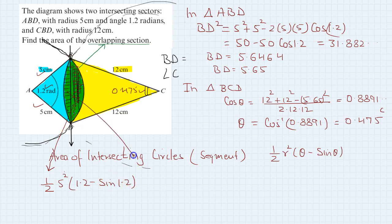This is half times 12 squared times 0.475 minus sine 0.475. We have used this formula for both segments.